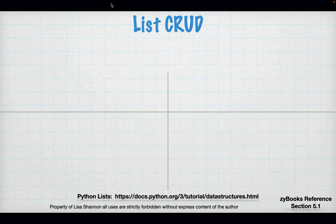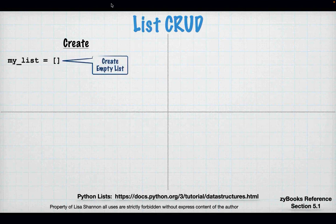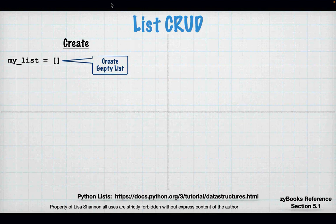To create a list, you create an empty list by assigning open and close square brackets to a variable. So 'my_list' is a variable because it's on the left-hand side of a single equal sign. On the right-hand side you have the open and closed square bracket, telling Python you're creating an empty list — a placeholder you can drop information into.